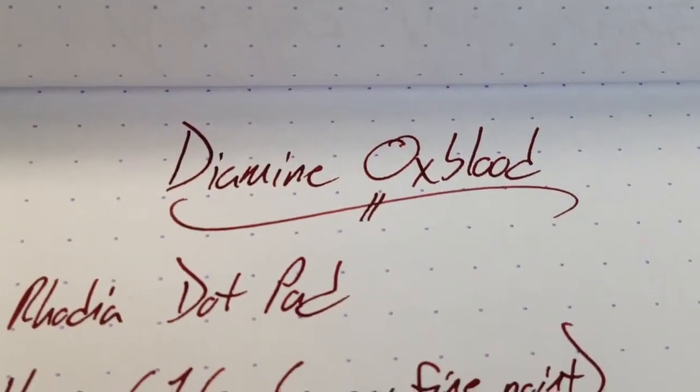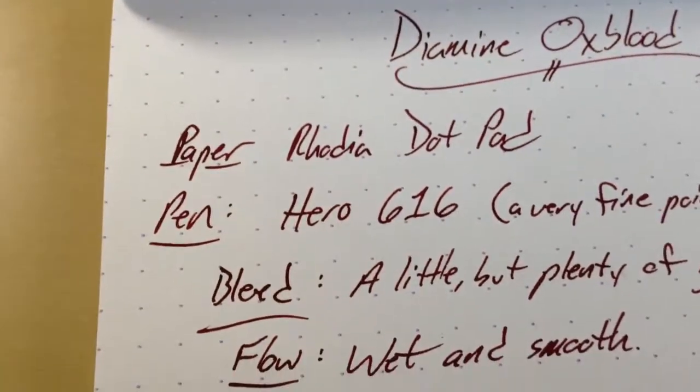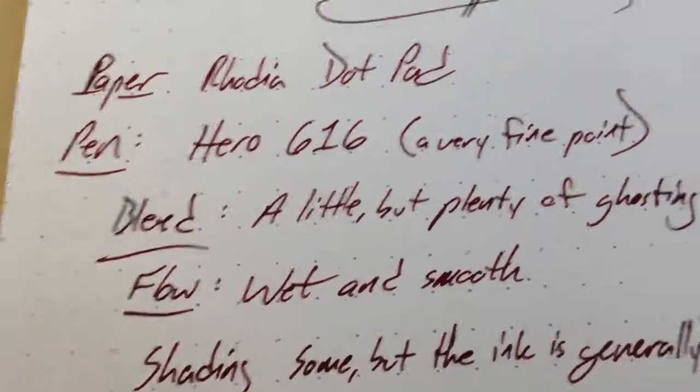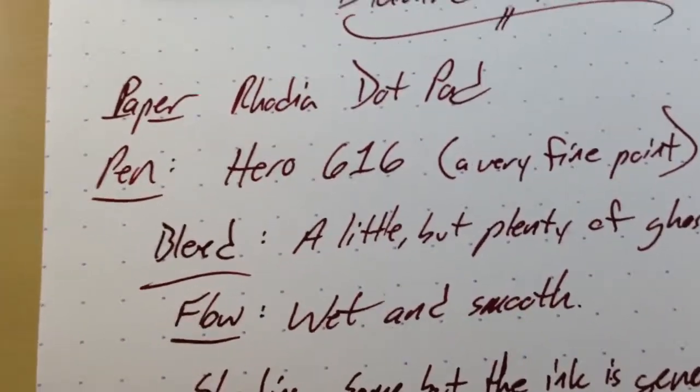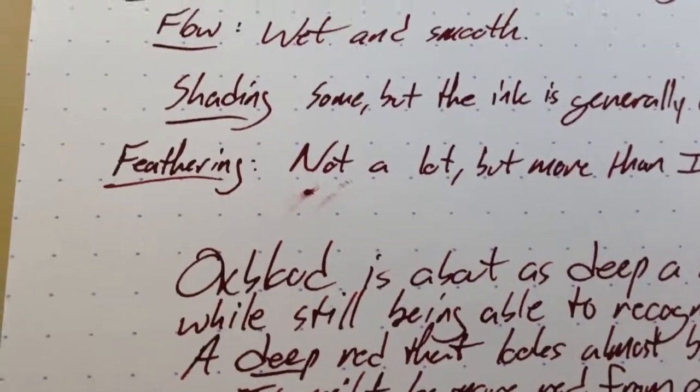Here we have Diamine's Oxblood. It's one I've been wanting to try to get my hands on for a while, and I finally remembered to order up a sample of it. Put it in my Hero 616, which is a very fine sort of nib, although they don't mark them, but those of you who have written with them know what I'm talking about.